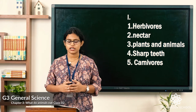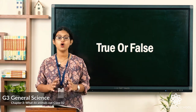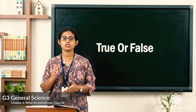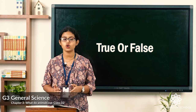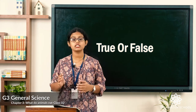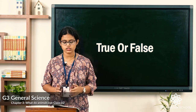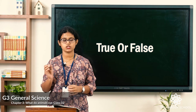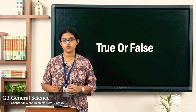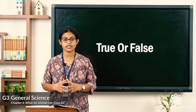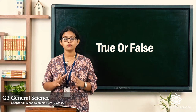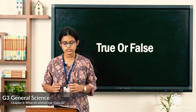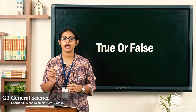Moving on to the second exercise: true or false statements. We have six sentences given — tick for statements which are true and cross for statements which are false. First: some birds such as sparrows eat only plants. Second: no animal eats both plants and animals. Third: bears and fox eat both plants and animals.